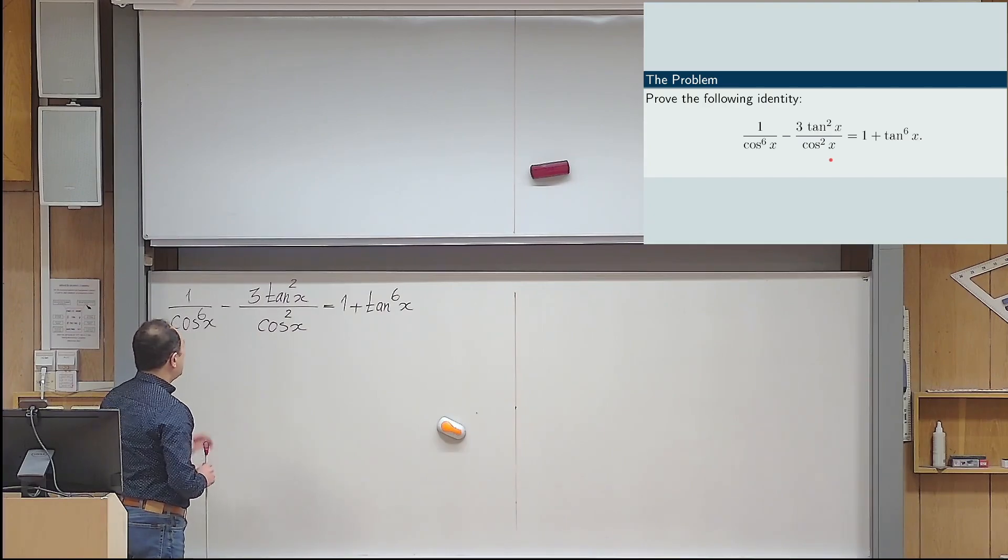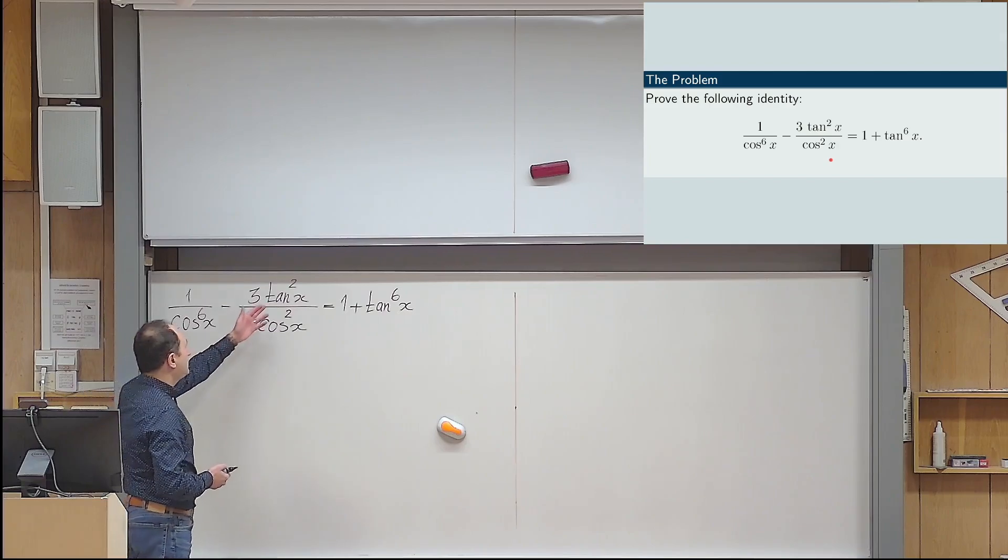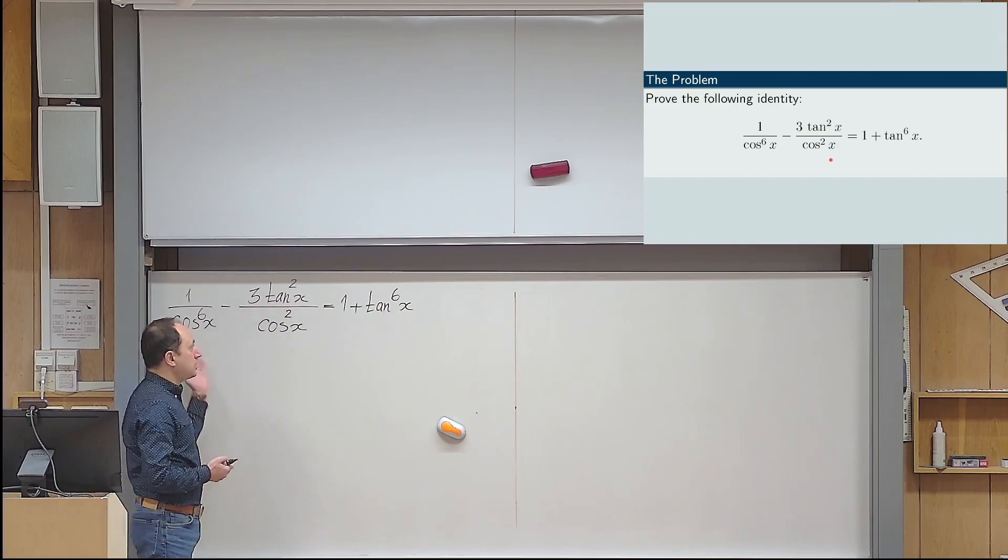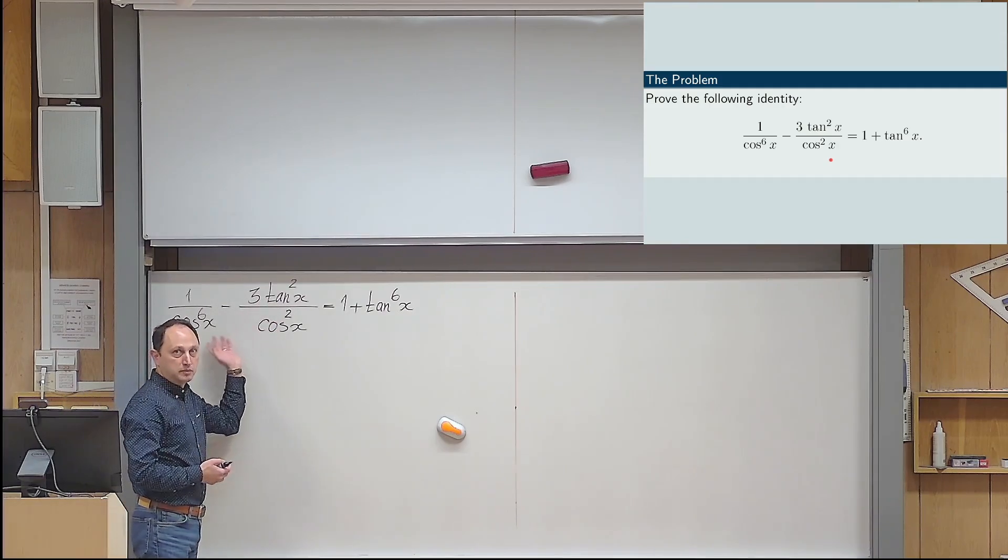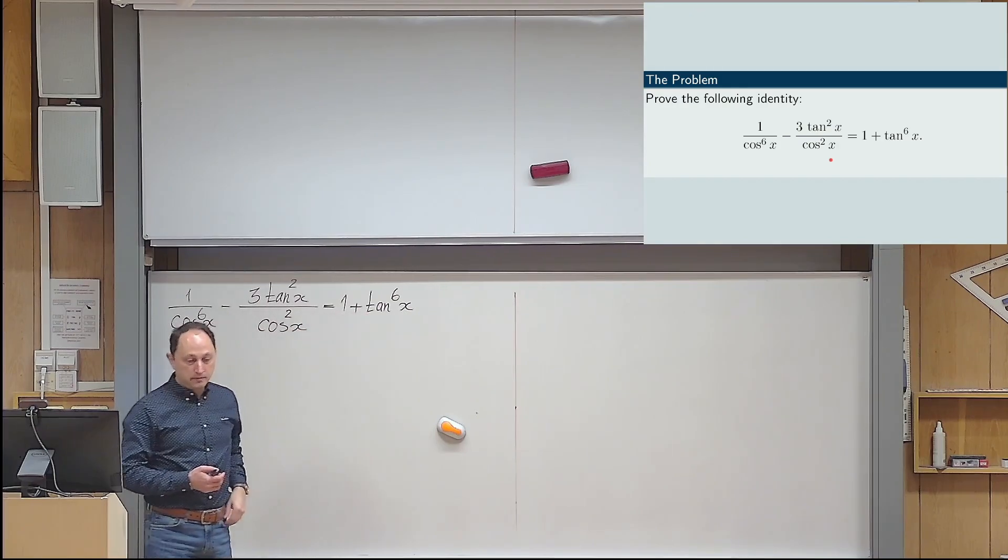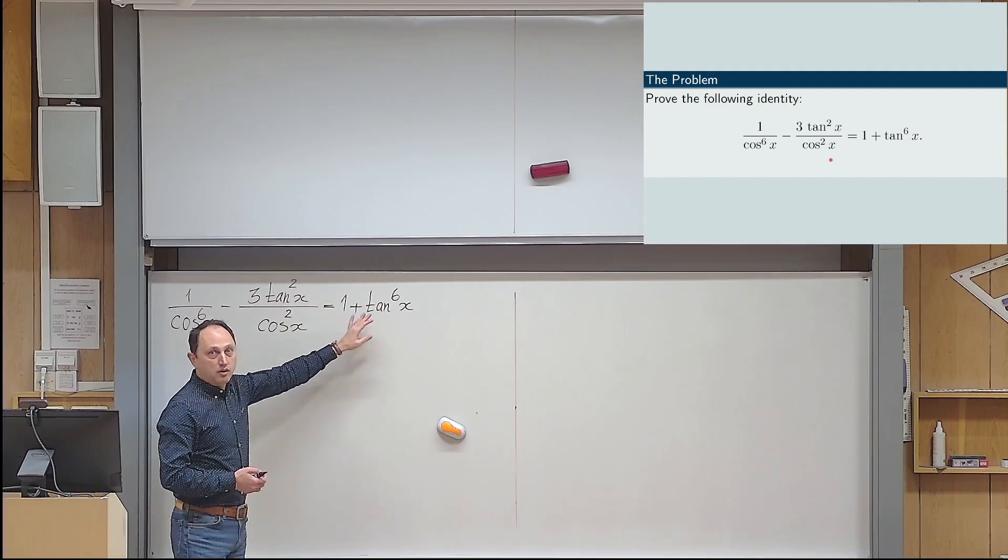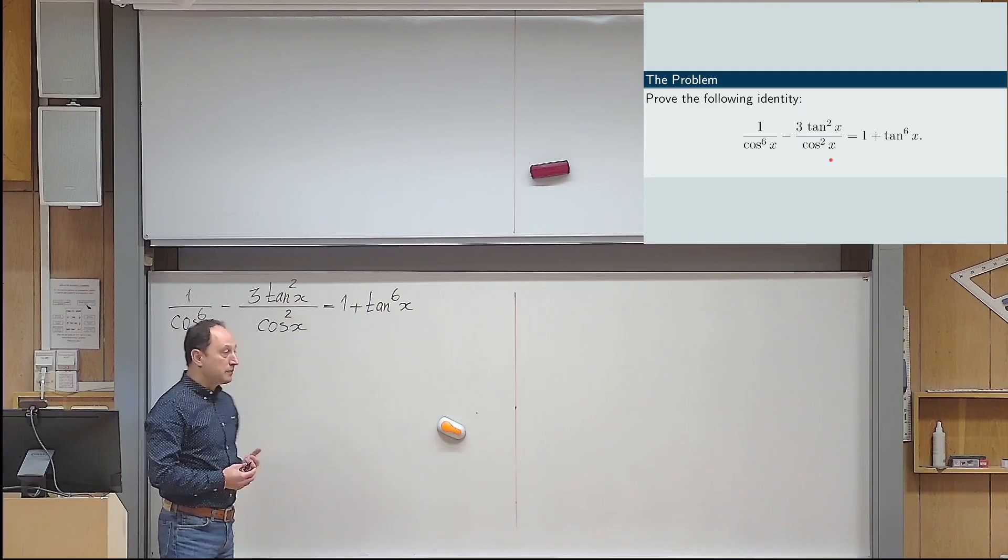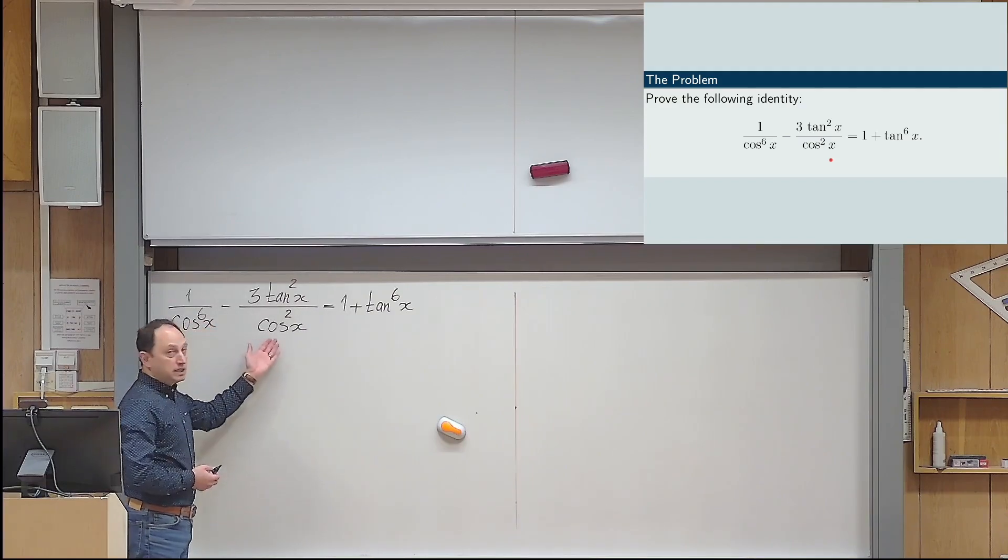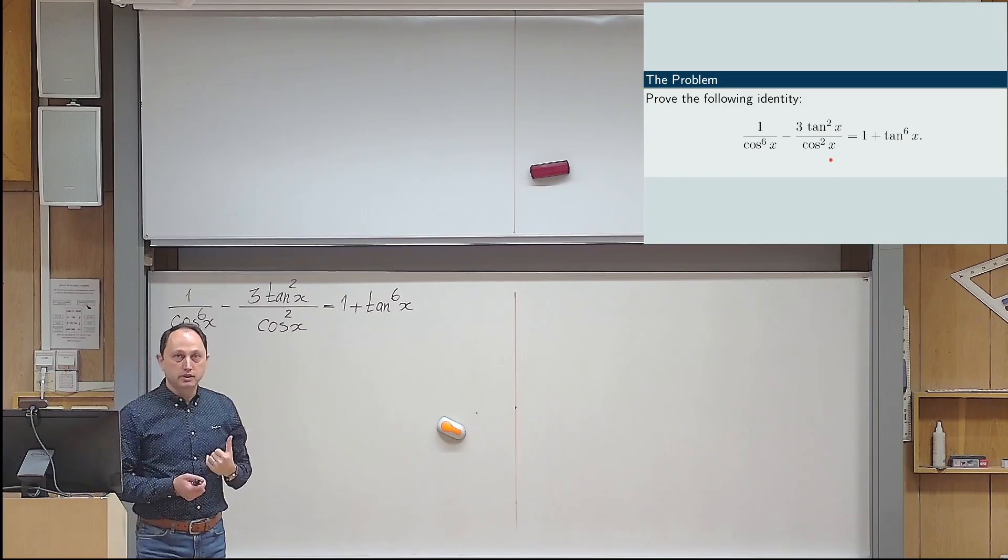Now, in order to prove this, of course, there might be different ways to tackle the problem. You might want to change tan to sine and cosine and try to manipulate the left-hand side to see if you can reach the other side. But when I see that the right-hand side is only involved with tangent x, I would prefer to write everything in terms of tangent, of course, if possible.